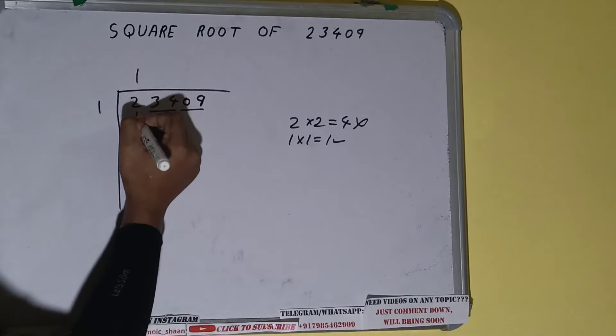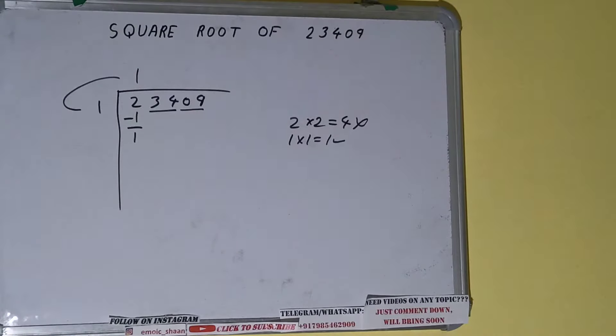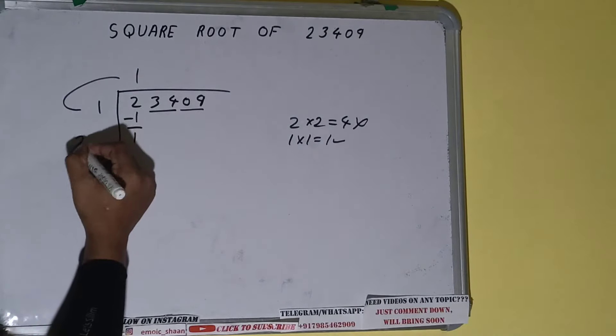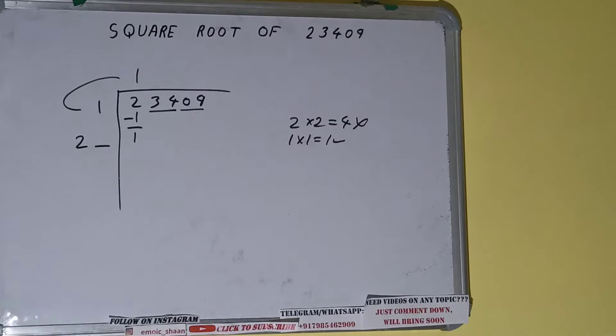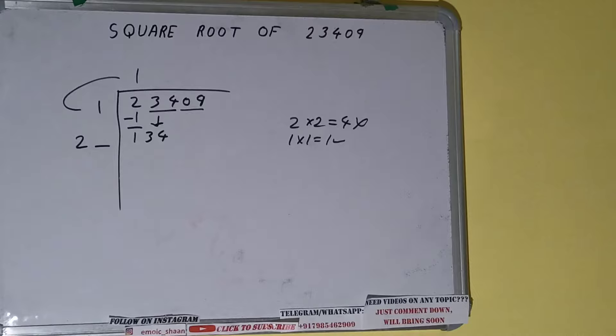So one here and one here, one subtract and we'll be left with one. We did one into one, so add both. One plus one will be two, write it here and keep a digit extra. This number we need to make it big, so bring the next pair down and it will become 134.